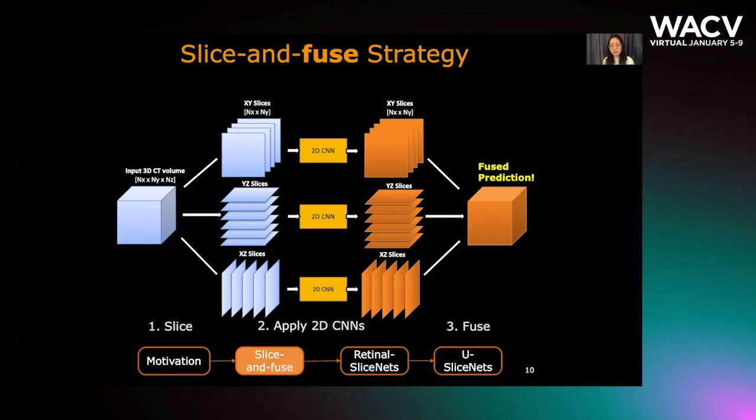The framework works as follows. First, we slice the input 3D volume into 2D slices along the X, Y, and Z axes. Next, we apply 2D CNNs on each 2D slice individually and get 2D predictions. Finally, we fuse the 2D predictions to get the final 3D estimation.